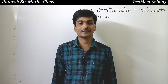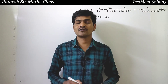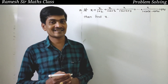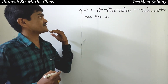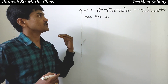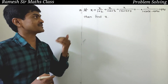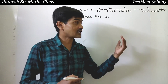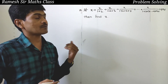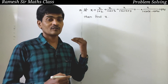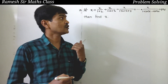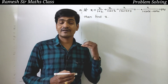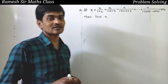Hi everyone, welcome back to Rameisar Math class. Today we have a complicated problem that we will solve step by step and discuss. If x plus x by (1+2) plus x by (1+2+3) plus x by (1+2+3+4) plus so on plus x by (1+2+3+...+4041) equals 4041, then find the value of x.